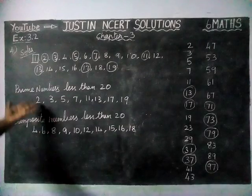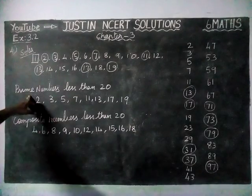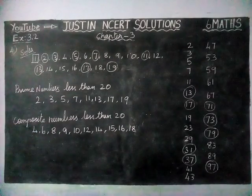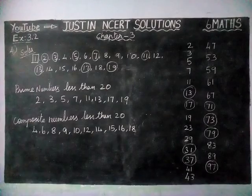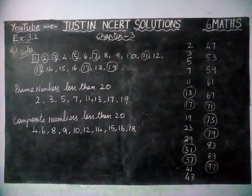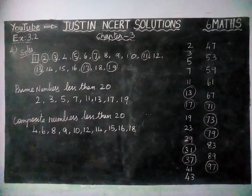Okay, that's all students. These are all the prime numbers less than 20, and these are the composite numbers less than 20. Kindly give your suggestions in the comments box, share it with your friends, and subscribe to our channel. Thank you.